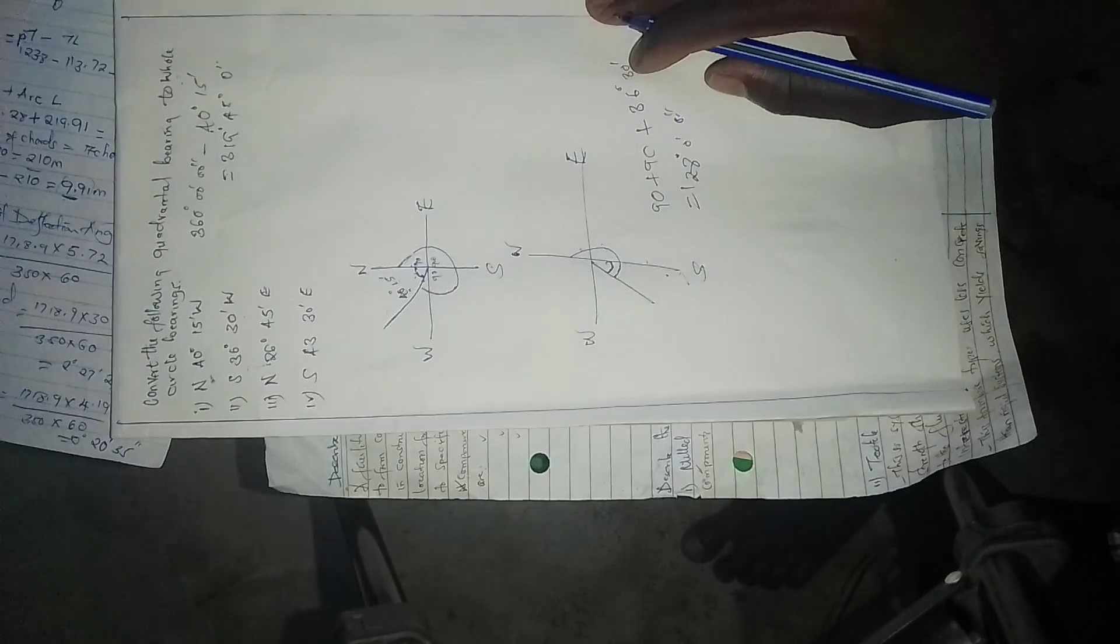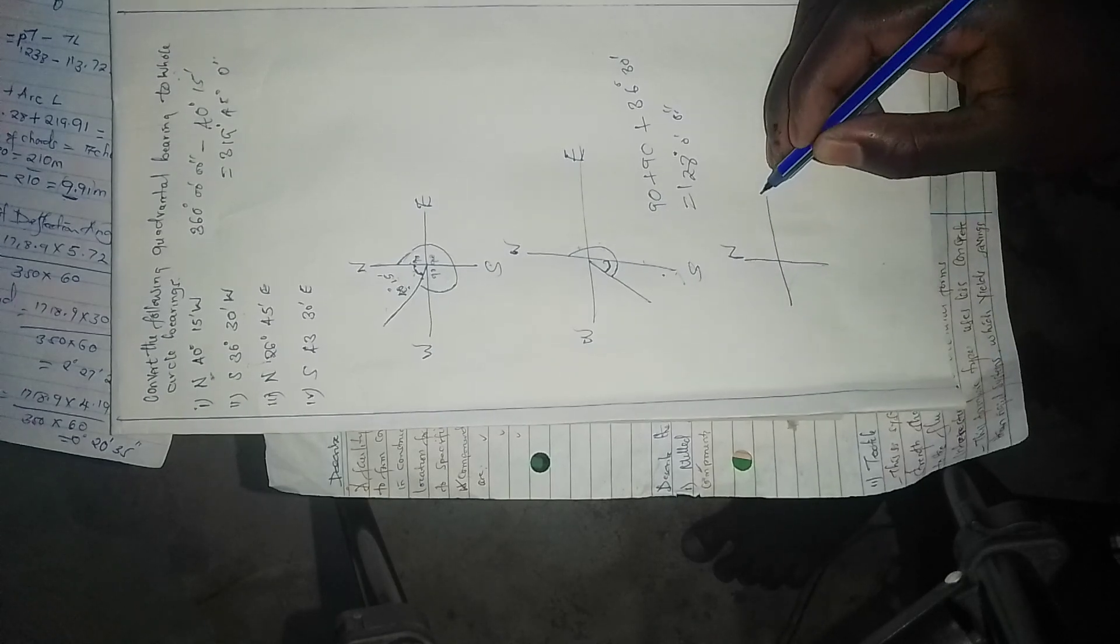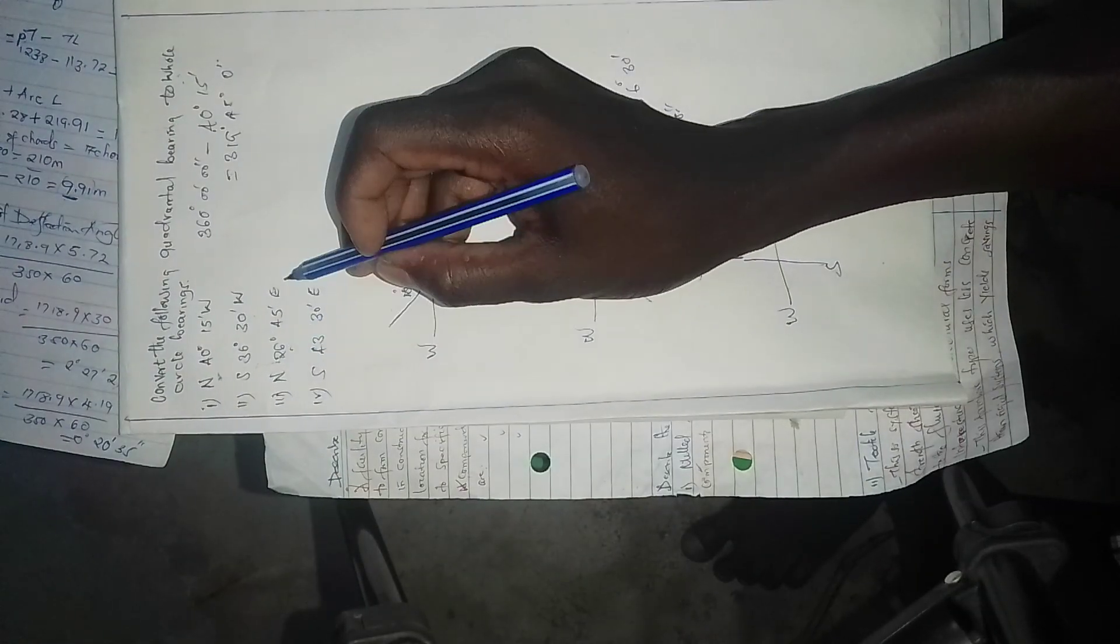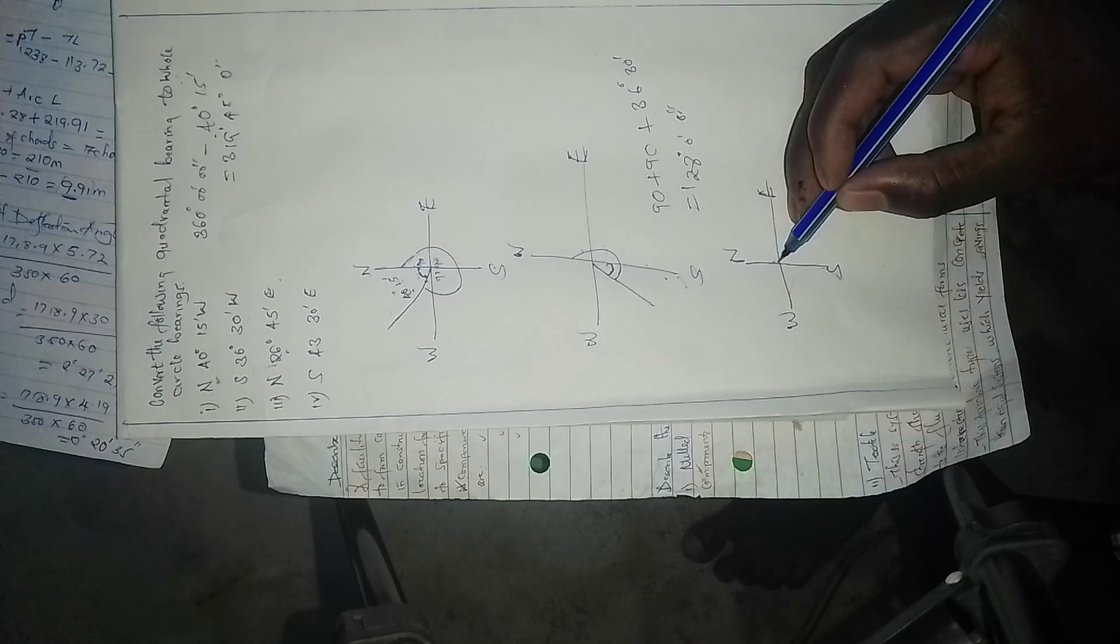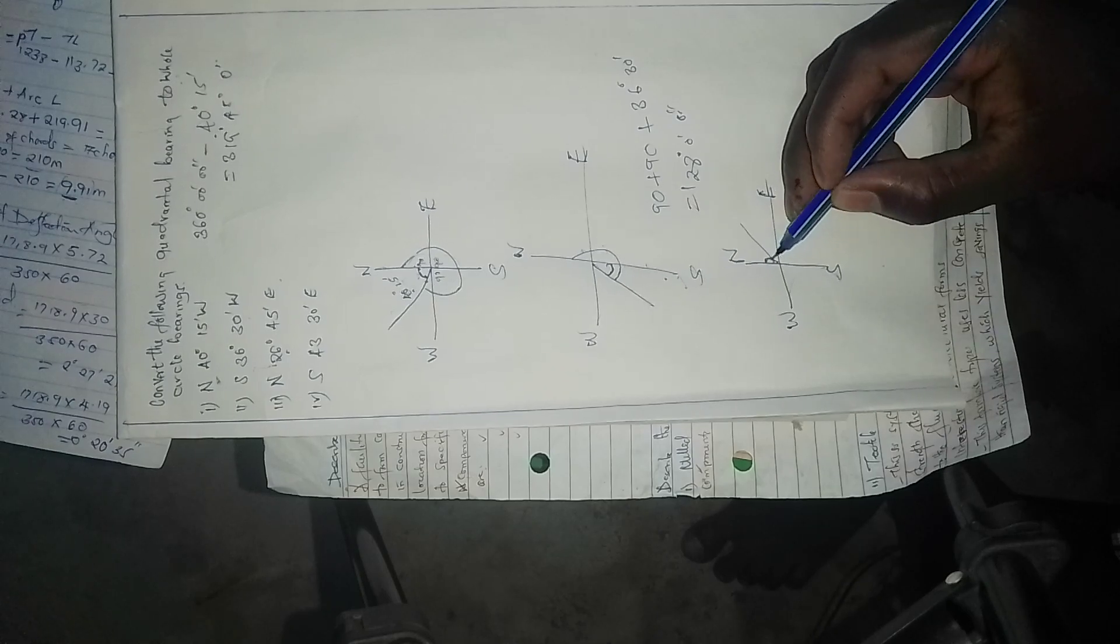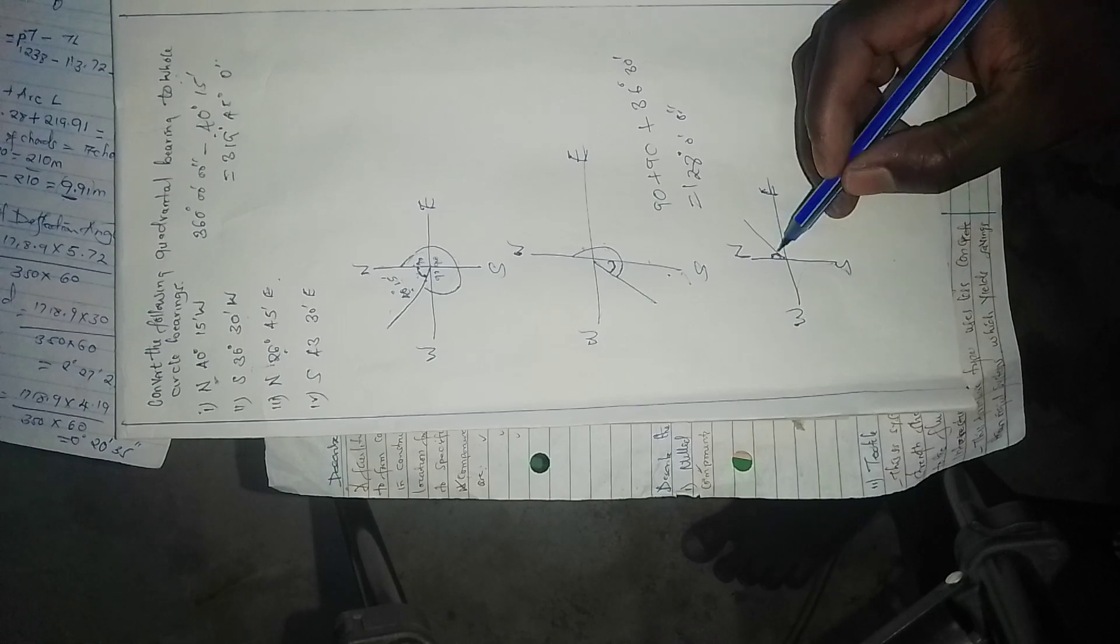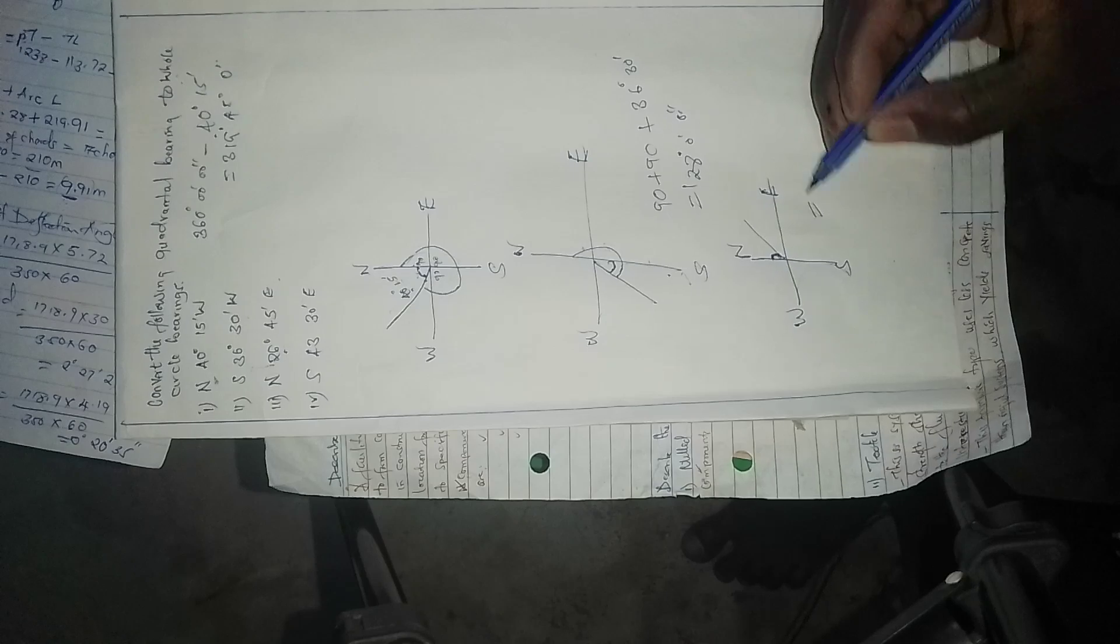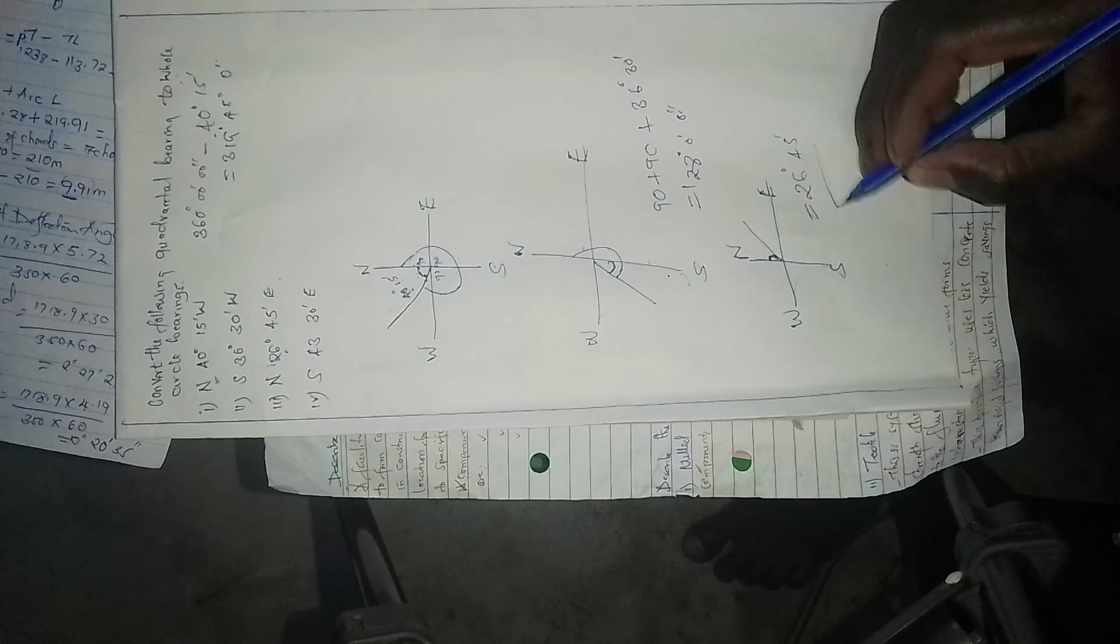The third one, we draw north, east, south, west. It says from north to east. The angle is from north to east. So this one remains the same: 26 degrees 45 minutes remains the same.